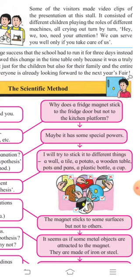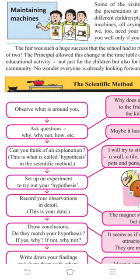Now let us learn about the scientific method. The scientific method is a procedure for conducting any experiment — it has certain steps to help find answers to questions. The first step is always to observe what is around you. There is a difference between seeing and observing: seeing means just a quick glance, while observing means looking at something very minutely and finding out the details.